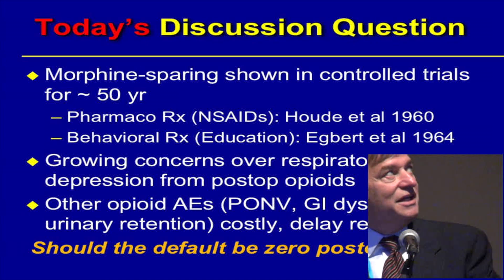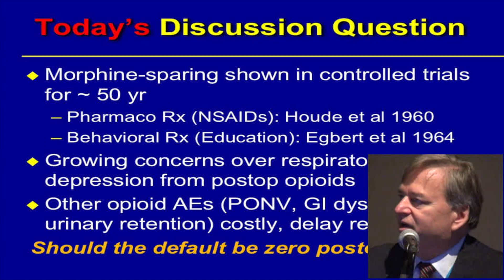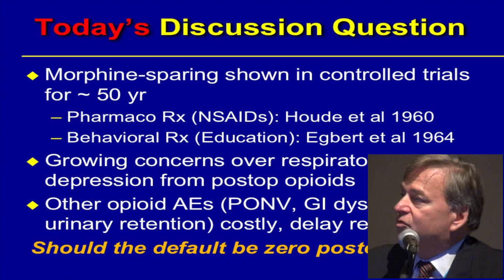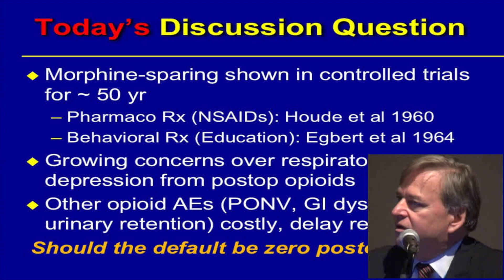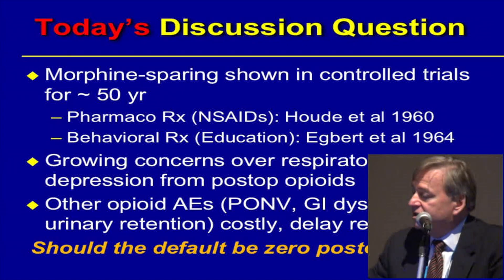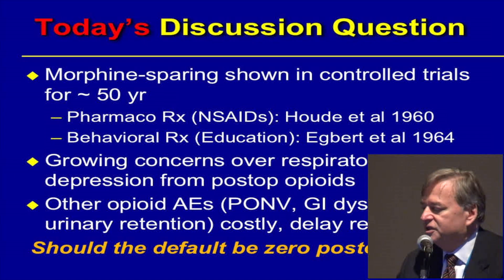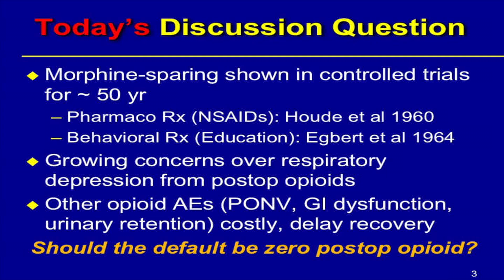This next slide was actually shown in 2012. It started with the idea that morphine sparing has been shown in controlled trials of a variety of interventions for about 50 years, starting with NSAIDs for pharmacotherapy at least in the 60s, with Ray Hood from New York, and behavioral therapy and education — the earliest paper I was aware of was by Egbert, Petit et al. in 1964. The focus was on respiratory depression from opioids, and other opioid adverse events like nausea, vomiting, and GI dysfunction were also costly and delayed recovery.